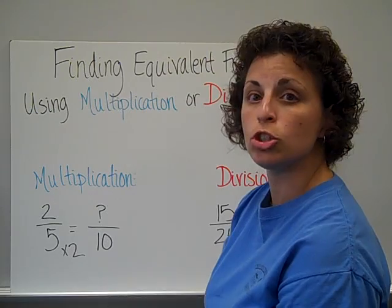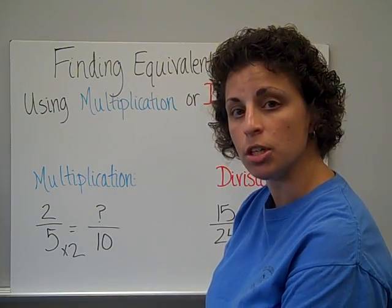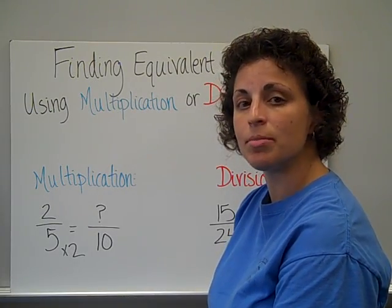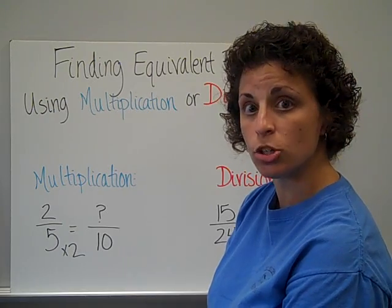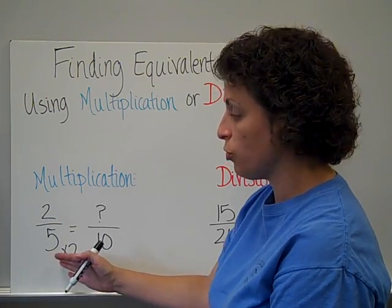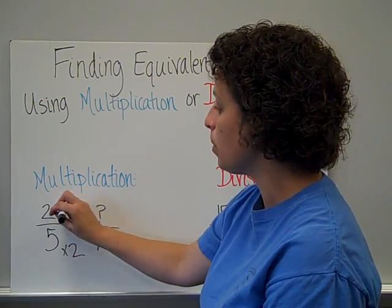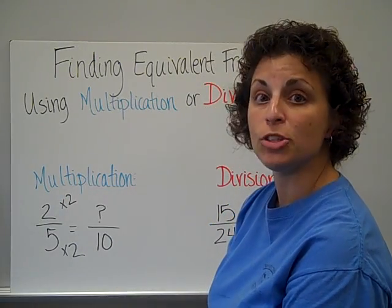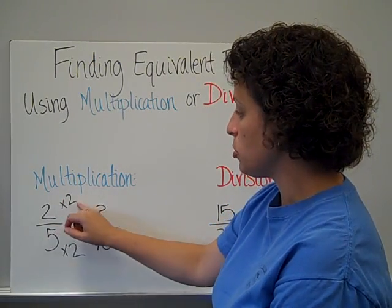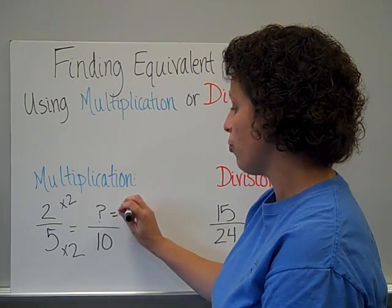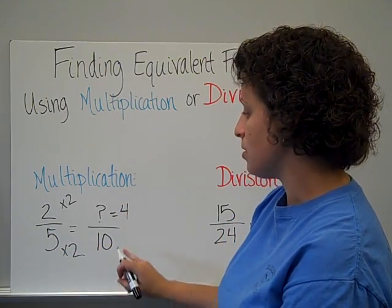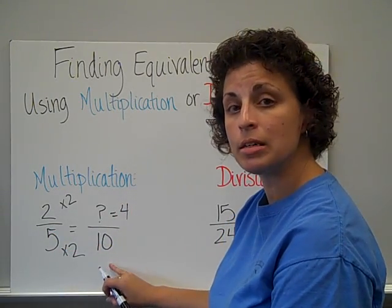And so, whatever you do to one part of the fraction, you have to do the exact same thing to the other part of the fraction. So, times two for the denominator, I have to multiply the numerator by two as well. So, two times two is four. So, two-fifths is the same as four-tenths.